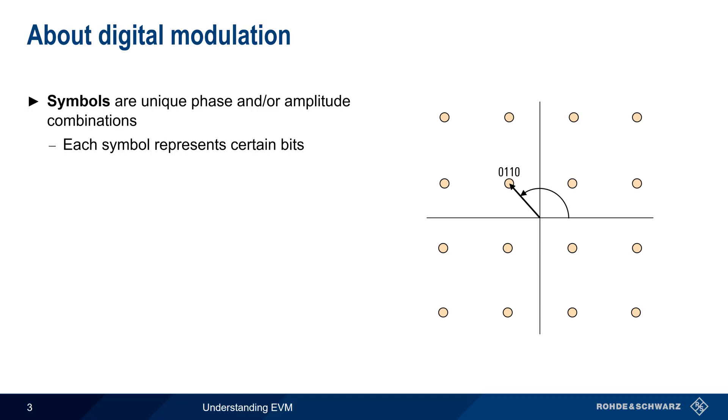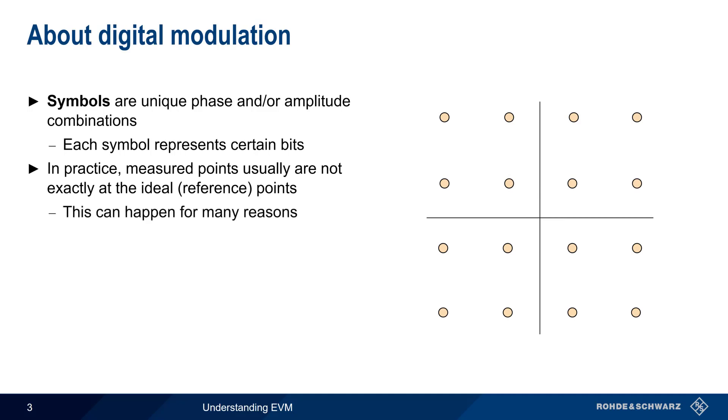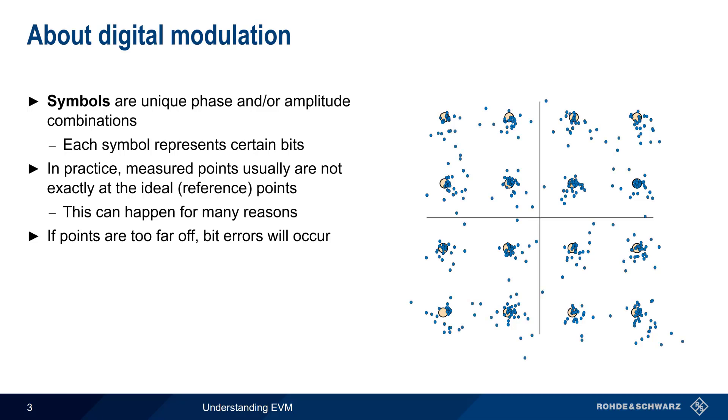In practice, however, the received or measured symbol points usually don't fall exactly on the ideal reference point, and this can happen for many reasons. If a received symbol point is too far away from the reference point, that symbol or point may be incorrectly interpreted, and bit errors will result. The greater the distance from the ideal or reference point, the greater the probability of bit errors.